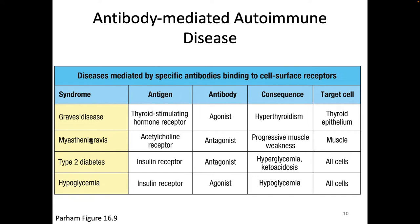Sometimes when an antibody binds to a receptor, it acts like a fake ligand and makes the receptor signal when it's not supposed to — that's an agonist. Alternatively, sometimes the antibody binds to the receptor and blocks it, preventing normal signaling — that's an antagonist. Graves' disease and Myasthenia Gravis show these two different examples.